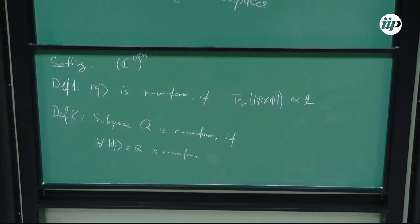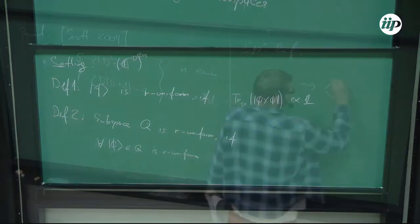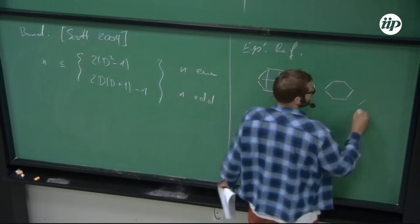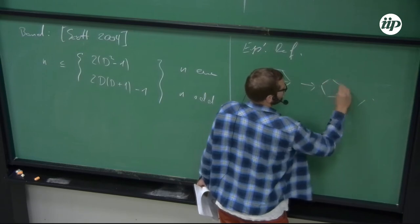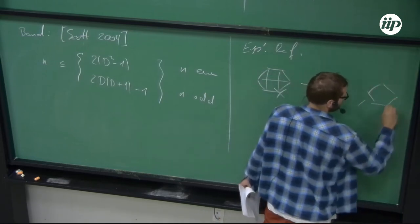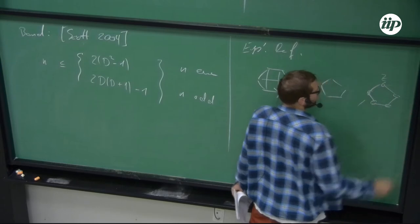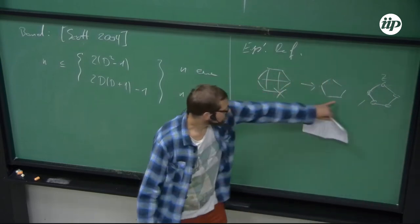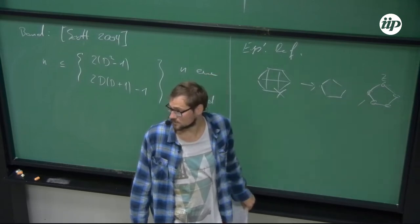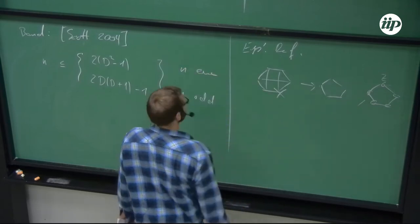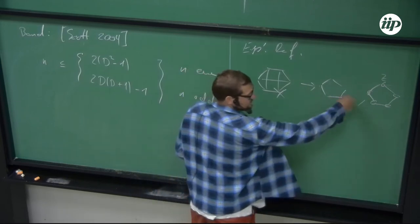If you take this graph state on six qubits and trace out one party, you get basically two graphs. Up to local complementation they look like two pentagons, with local Z decorations. The subspace spanned by these two states will indeed be 2-uniform — so it will be an R-uniform subspace. This is the pentacode.